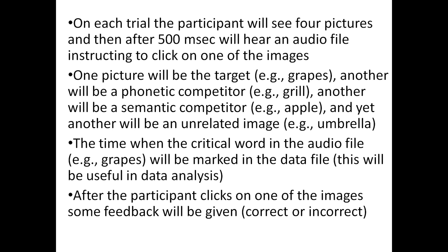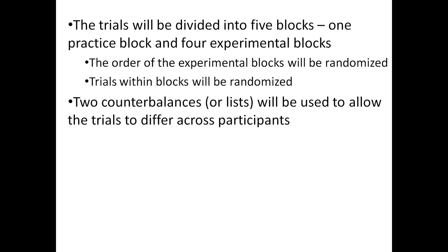After the participant clicks on one of the images, it gives feedback saying correct or incorrect. The trials are divided into five blocks: one practice block and four experimental blocks. Experimental blocks are in randomized order and trials within each block are randomized. The project handles two different versions or counterbalances of the trials — the same project handles both.